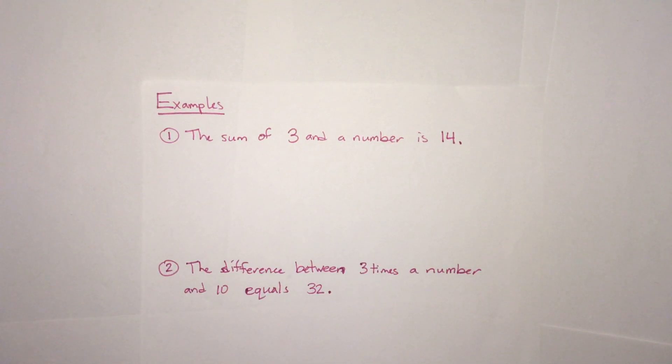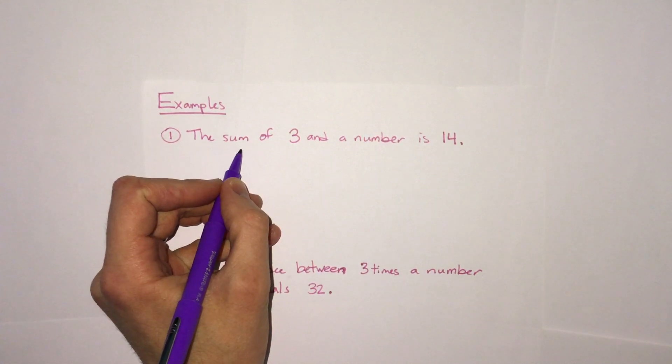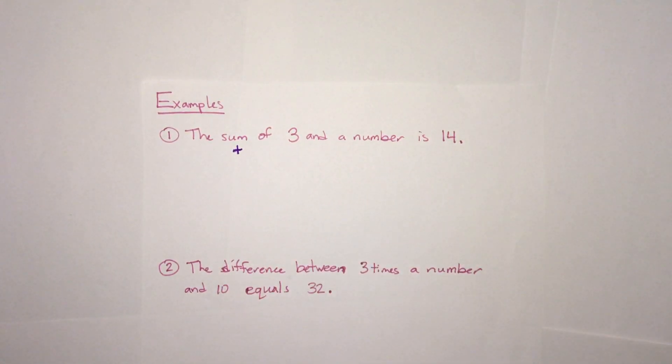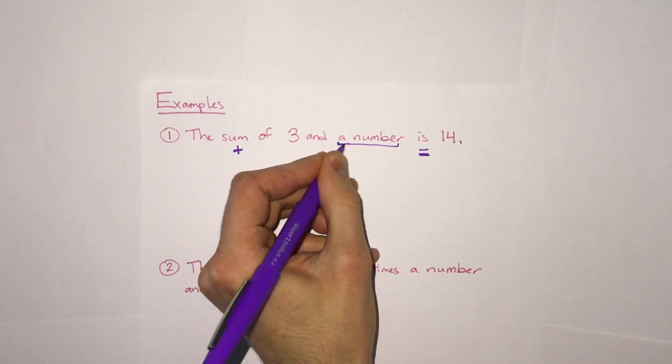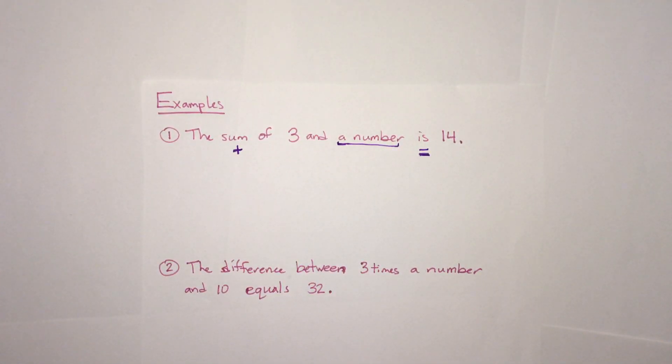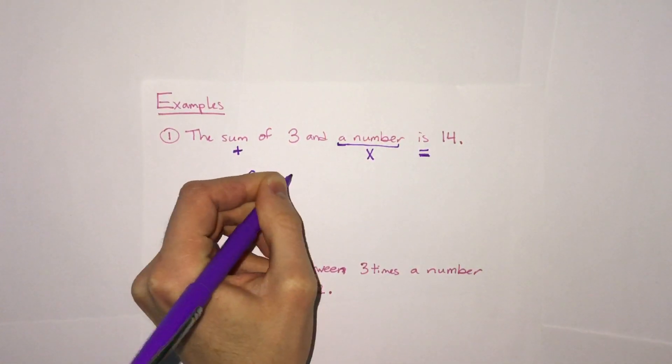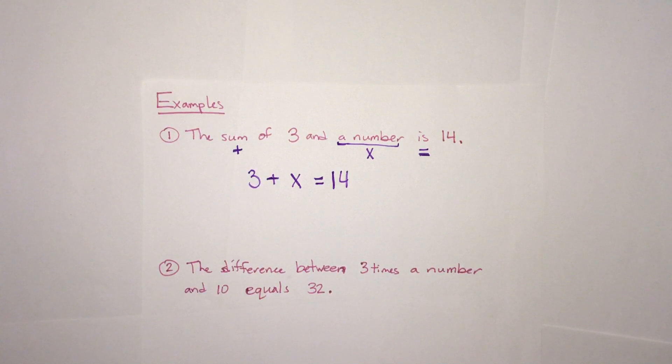One sentence here we have, keeping it simple to start with, the sum of three and a number is 14. Remember the word sum means addition and we also have is. Remember that the word is often means equals. We look at the sum of what? The sum of three and a number. When we see this word a number, it means that the number we don't know. We can pick a variable for it. What we'd say is the sum of three and a number is three plus x is or equals 14. Three plus x equals 14.